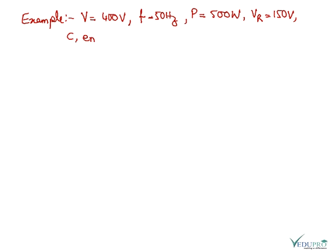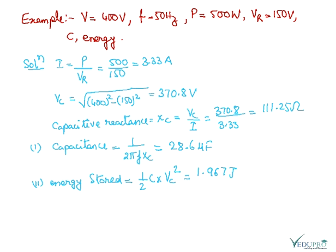Current I is given by power upon voltage. Now VC is the square root of V squared minus 150 squared.